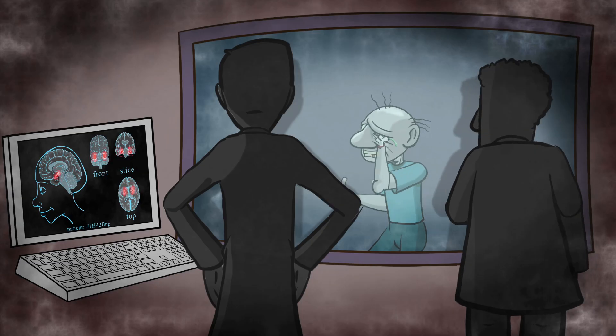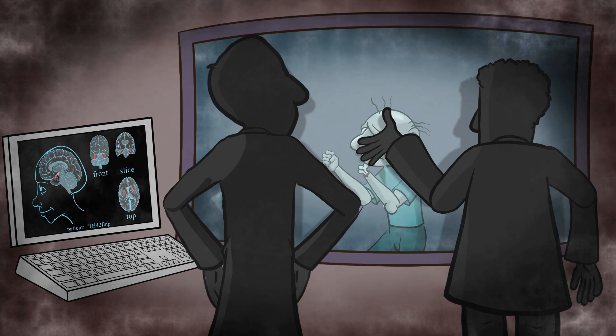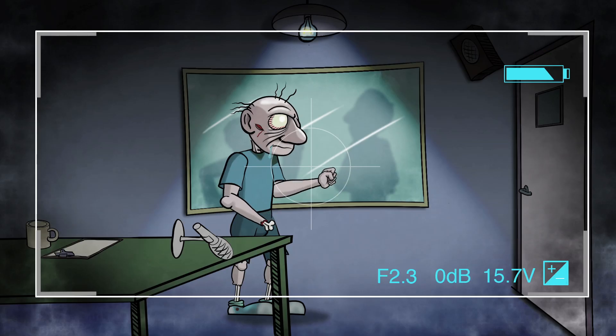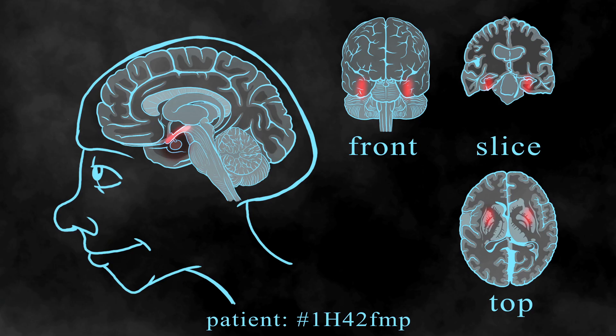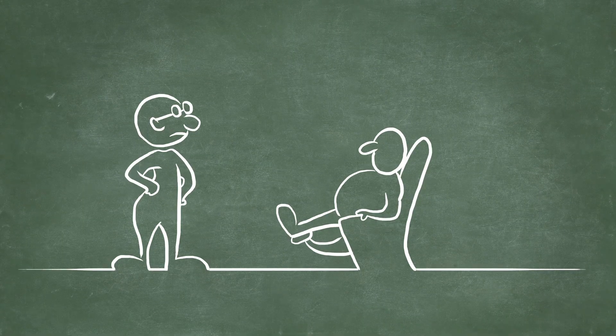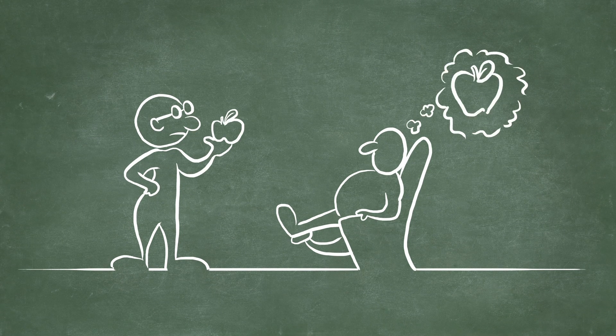Connection between the amygdala and hippocampus links emotion and memory together so that you remember really emotional stuff better than boring everyday things. Yeah, like patient HM. In the 1950s, surgeons removed both his left and right hippocampuses to treat his epilepsy, but after the surgery he couldn't remember any new information for longer than a few minutes. Zombies appear...